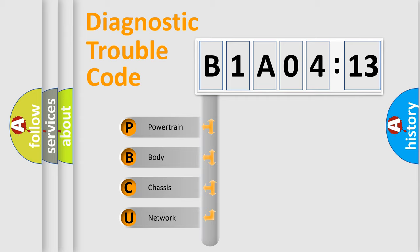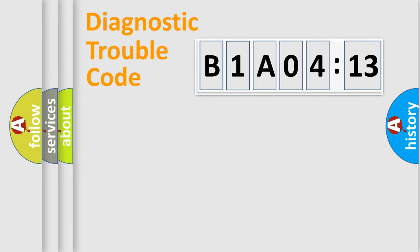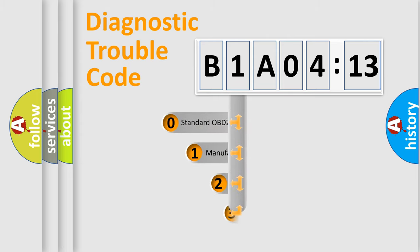We divide the electric system of automobiles into four basic units: Powertrain, Body, Chassis, and Network. This distribution is defined in the first character of the code.